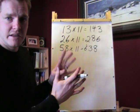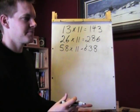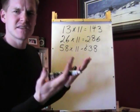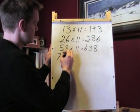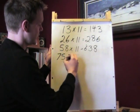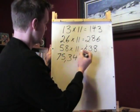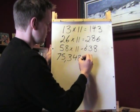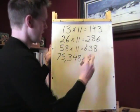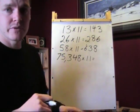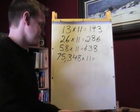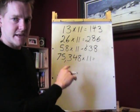So, let's take this idea and expand it into something a little bit more ridiculous. If we're going to multiply a number like 75,348, we're going to multiply this number, 75,348 times 11.